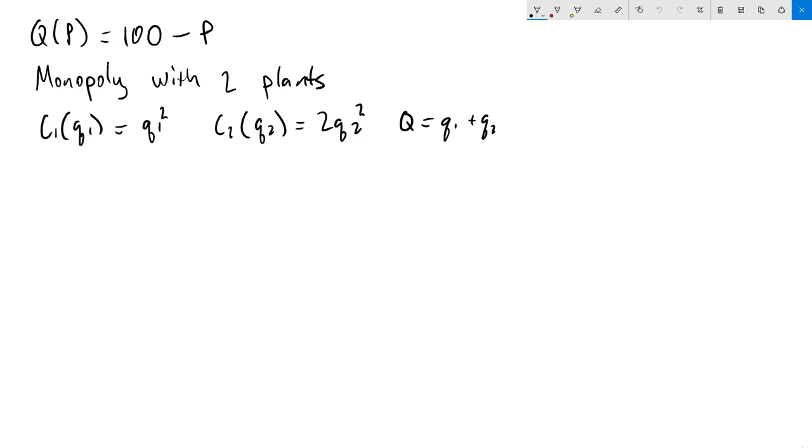Hello everyone. In this video I'm going to go through an example of profit maximization for a monopoly with two plants. Our starting information is that we have a demand function Q(P) = 100 - P, and our monopoly has two plants. The first plant has a cost function C₁(Q₁) = Q₁², and the second plant has a cost function C₂(Q₂) = 2Q₂². We will use capital Q to denote the firm's total output, which is Q = Q₁ + Q₂.